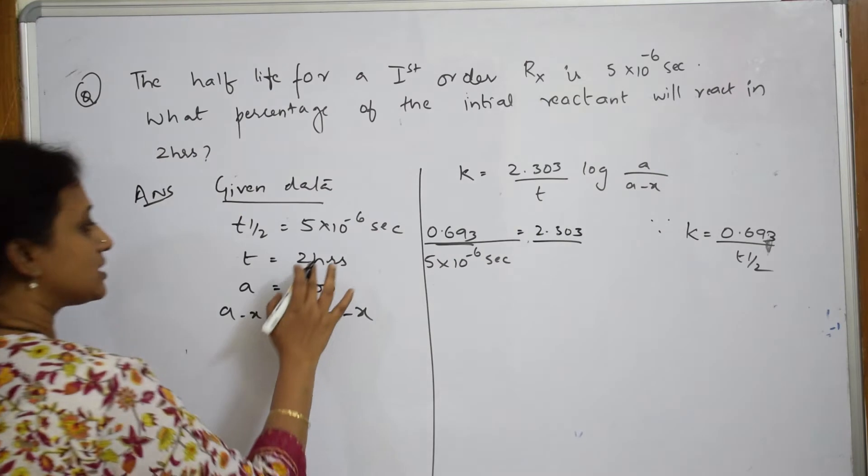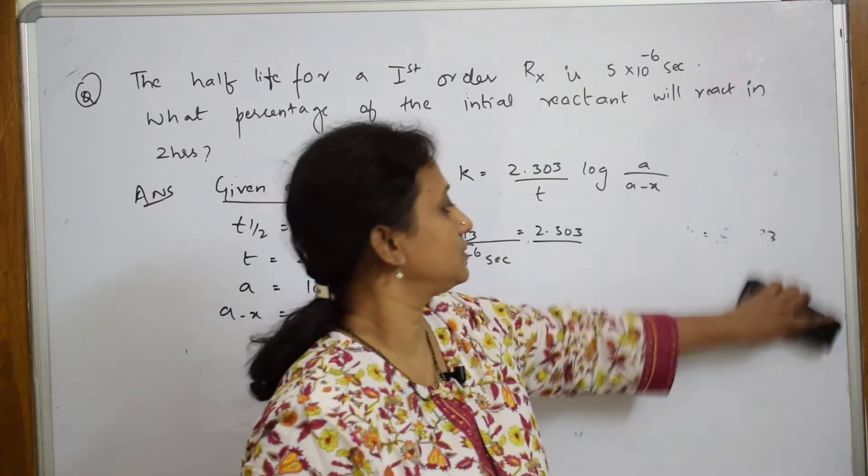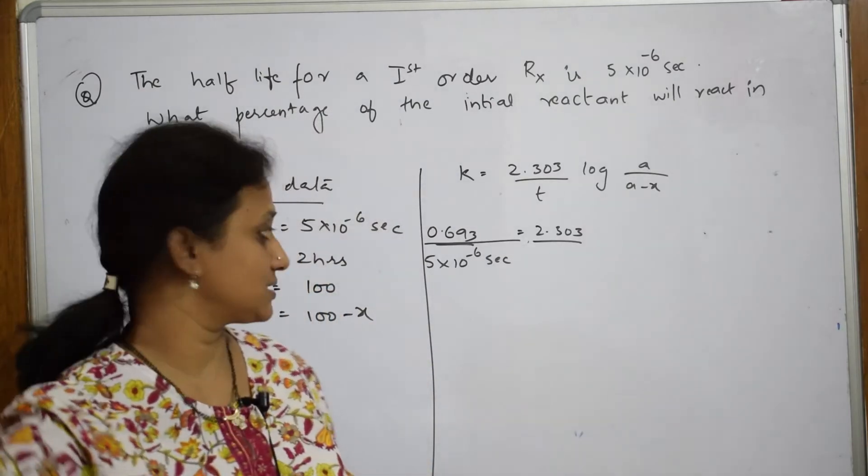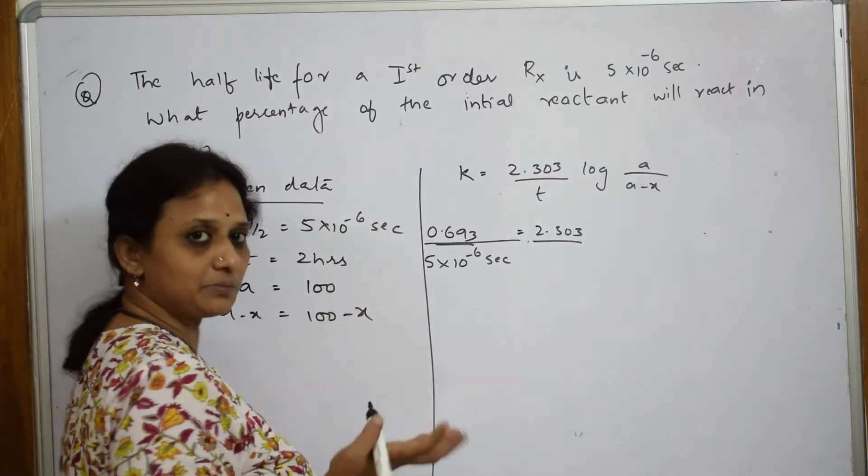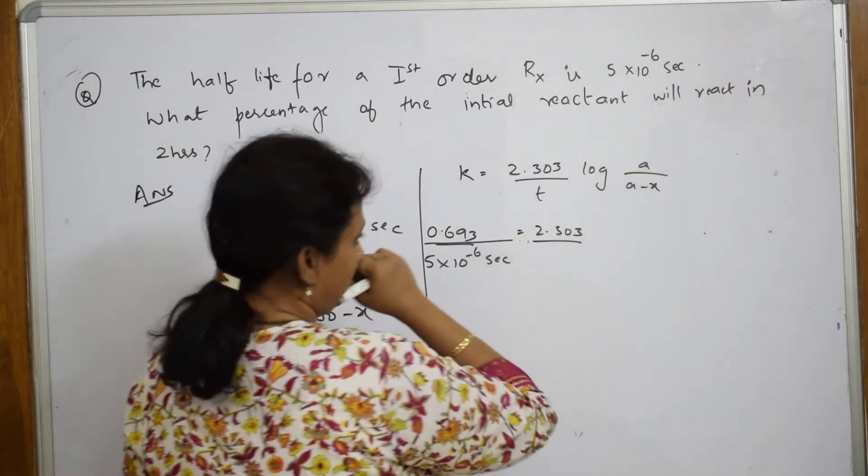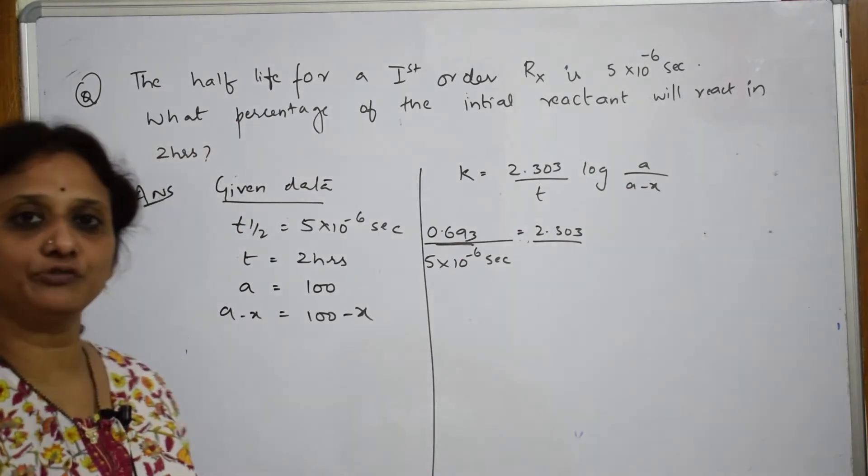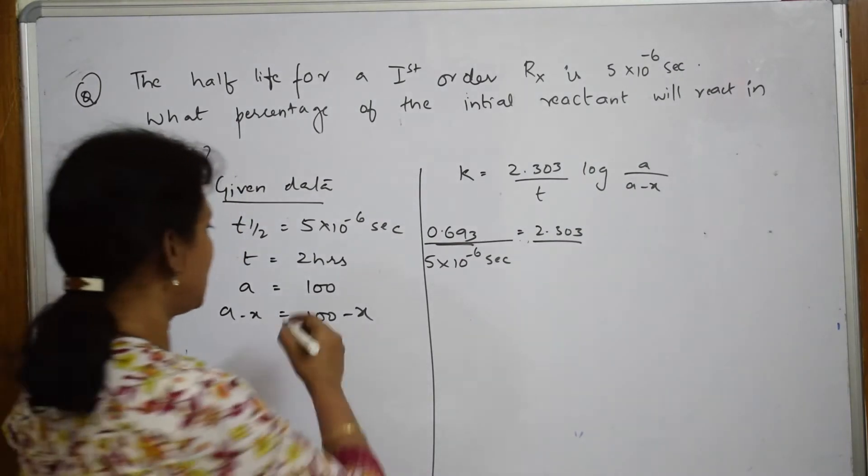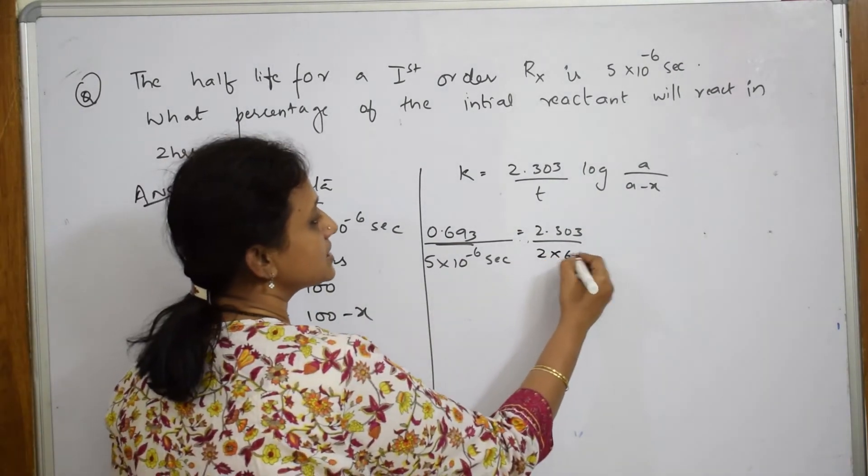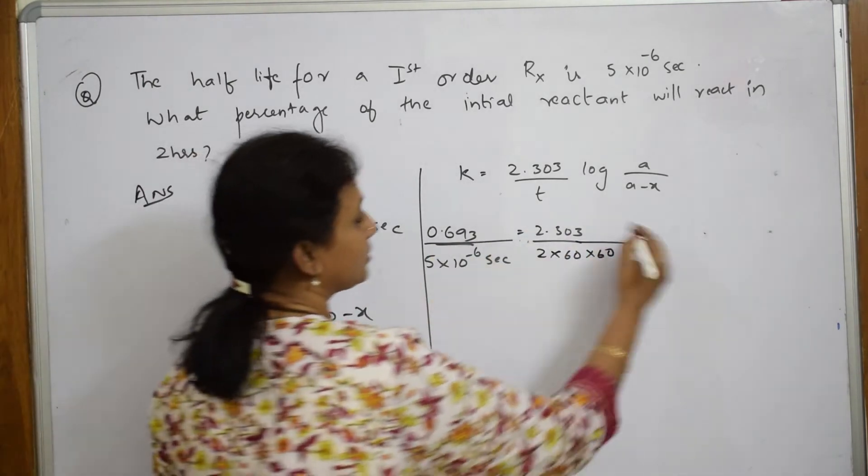What is t given to us? 2 hours. Because the unit for first order rate kinetics can be minutes or hours, but because this particular thing is given in seconds, I should take everything in uniform units. So this I am going to take as 2×60×60 seconds. Now all are the same units.